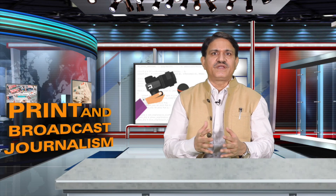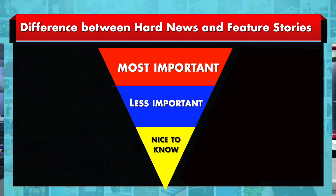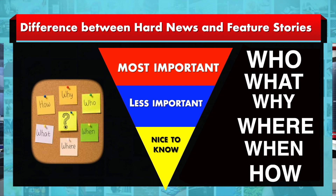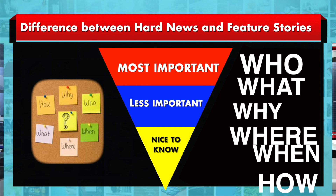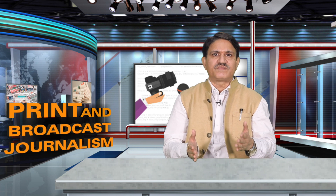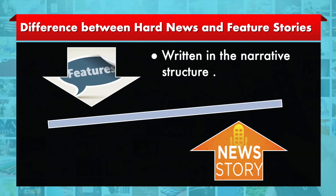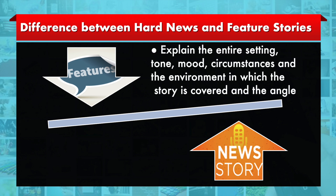News stories are written in the inverted pyramid style of writing with focus on the 5 W's and 1H, which helps readers scan through the story. This style also facilitates editors in newsrooms to edit stories in situations of space crunch and when designing the publication. Feature stories are often written in the narrative structure as they need to explain the entire setting, tone, mood, circumstances, and the environment in which the story is covered, and the angle that the writer wants to take.